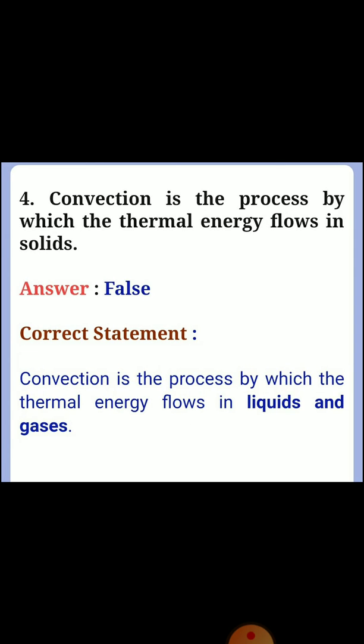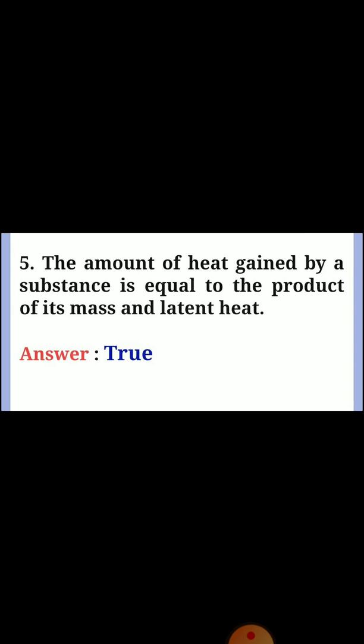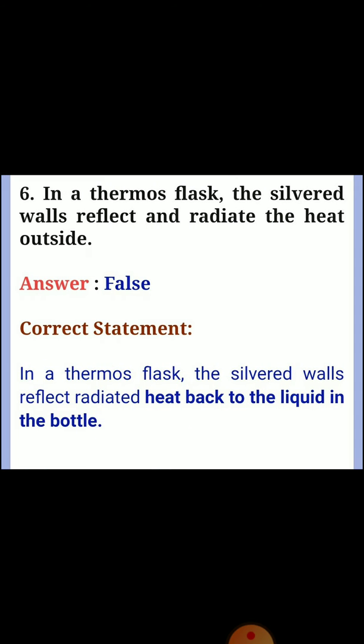Question 4: Convection is the process by which thermal energy flows in solids. Answer: False. Correct statement: Convection is the process by which thermal energy flows in liquids and gases. Question 5: The amount of heat gained by a substance is equal to the product of its mass and latent heat. Answer: True. Question 6: In a thermos flask, the silvered walls reflect and radiate the heat outside. Answer: False. Correct statement: In a thermos flask, the silvered walls reflect radiated heat back to the liquid in the bottle.